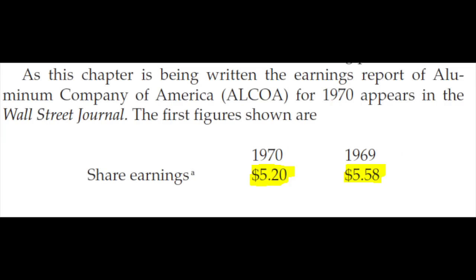Graham's example is Alcoa, the aluminum producer. Earnings in 1969–1970 had been pretty stable — reported earnings were $5.20 and $5.58. The stock price was around $60, so the price-to-earnings ratio was around 12, which is not bad.